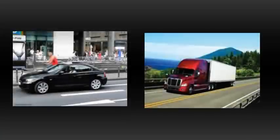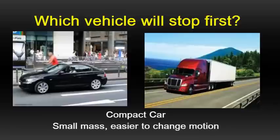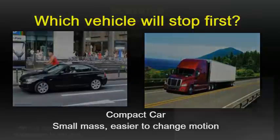Imagine a compact car and a large truck traveling with the same velocity. The drivers of both vehicles put on the brakes at the same time. Which vehicle will stop first? You probably would say that the compact car will stop first because you know about Newton's laws. You know that smaller objects are easier to stop than larger objects. But why? The answer is momentum.